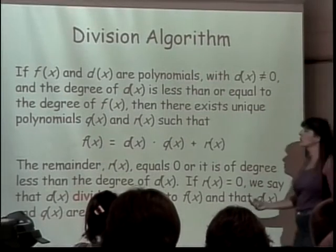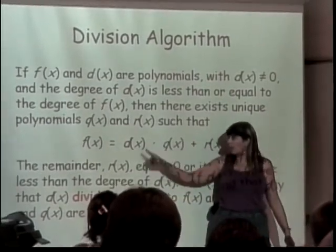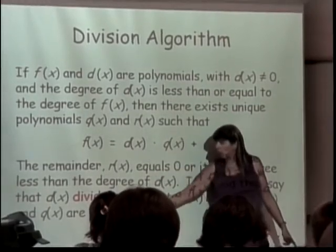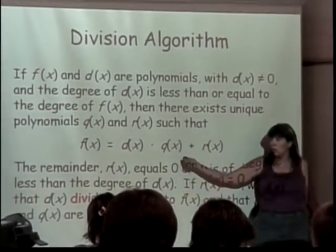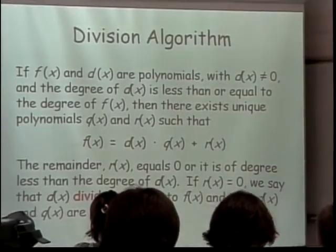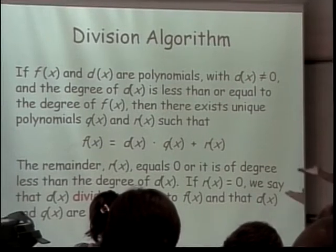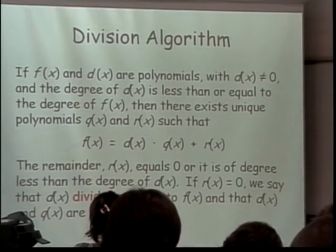And so the same works. If we end up with a remainder, then the original divisor went in evenly and the divisor and also the quotient are both factors of our polynomial. So we're going to use those dividing evenly in factors in terms of polynomials just like we did in terms of numbers.